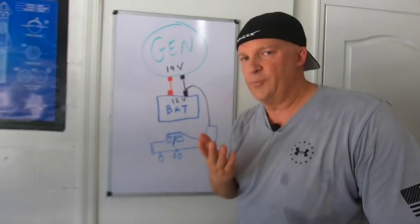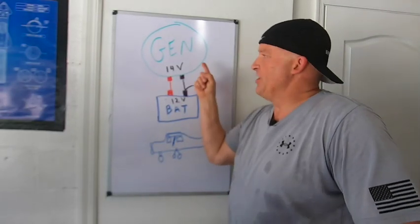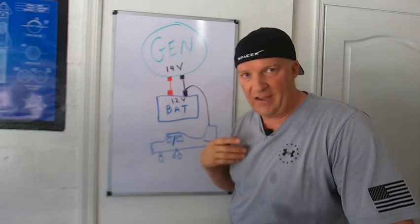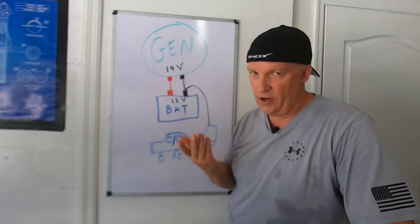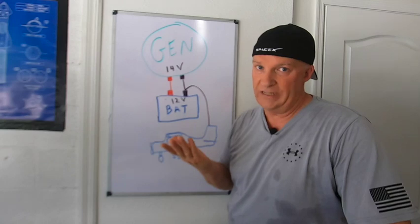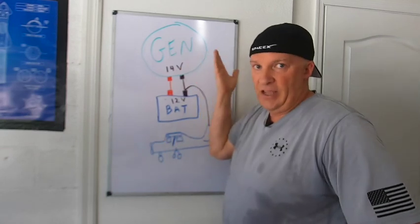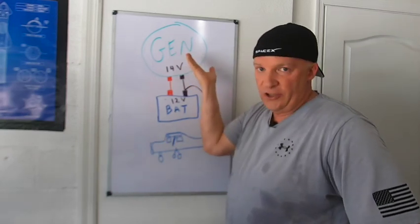Okay, all airplanes are pretty much set up like this. They have a generator and they have a battery. Some airplanes have an alternator, which makes AC current, but it's then turned into DC current and it ends up just like this. So let's just call this generator.